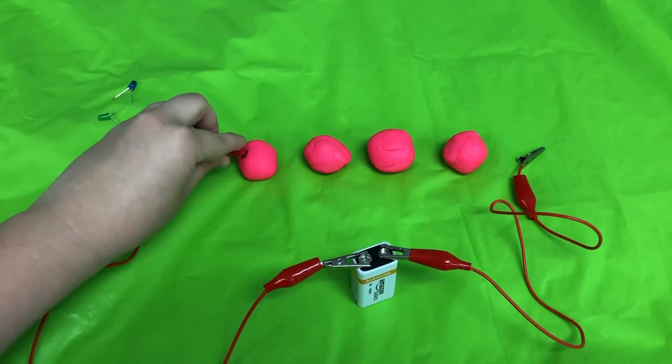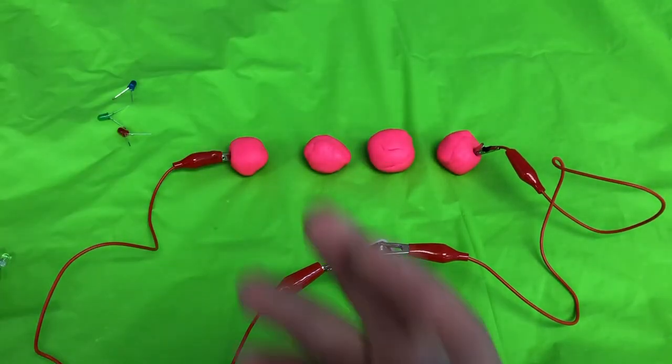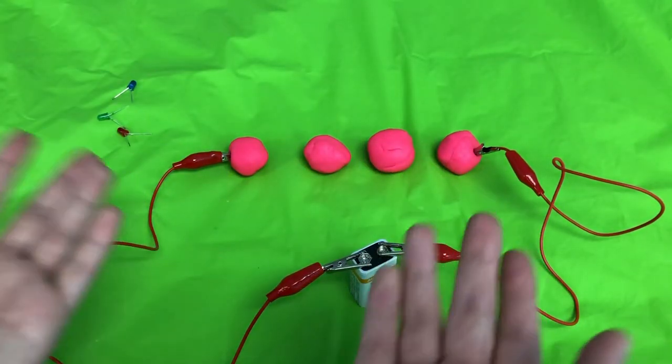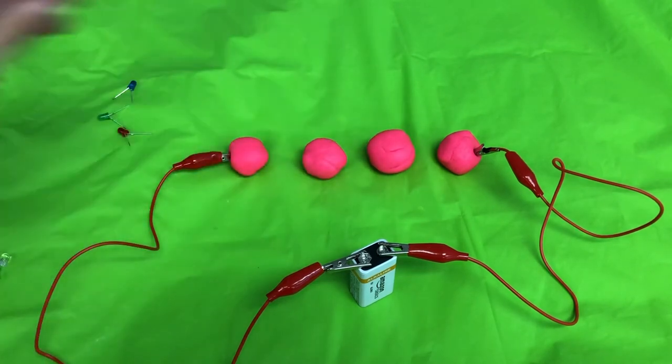And so now I'm going to do the same thing. Put the alligator clip into this side, the other over here. Now it doesn't matter if the Play-Doh balls are different shapes or sizes. It is still going to work as long as the LEDs are connecting them all together.